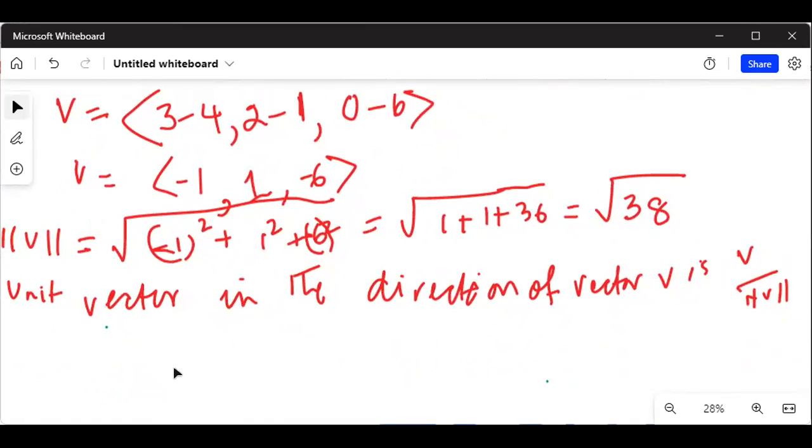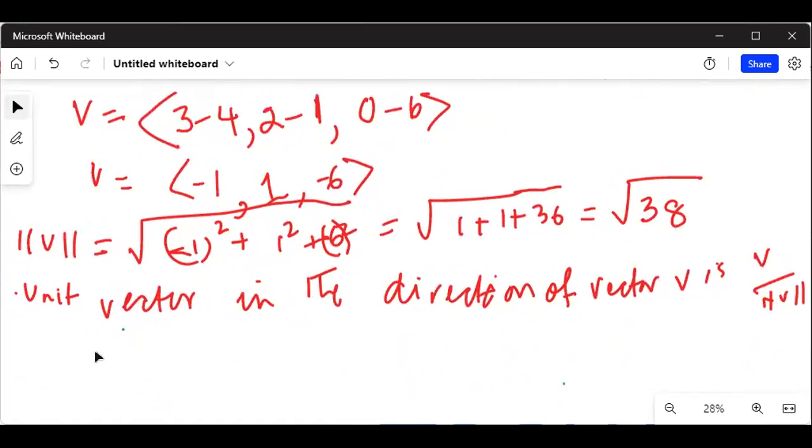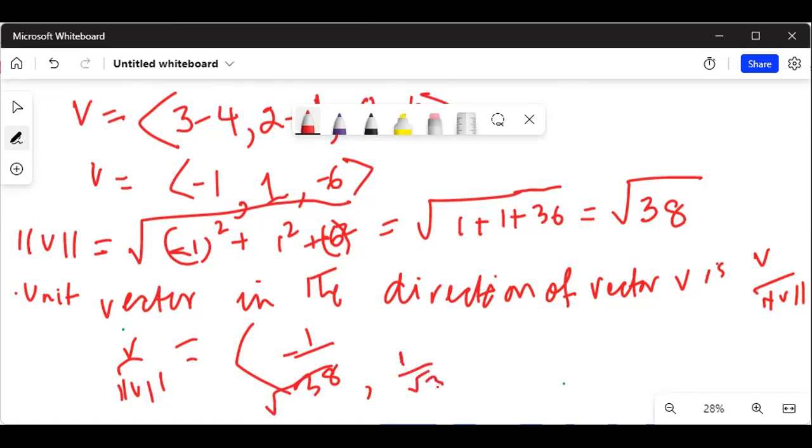So the unit vector in the direction of V is V over magnitude of vector V, and that is equal to minus 1 over square root of 38 for the first component, comma, then 1 over square root of 38, comma, minus 6 over square root of 38.